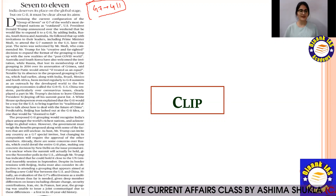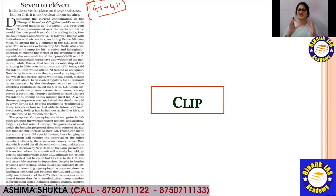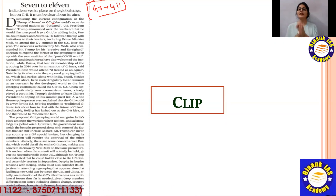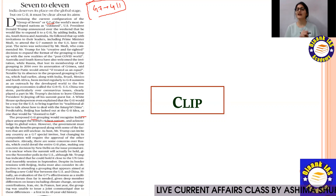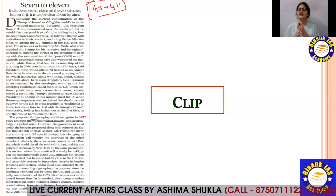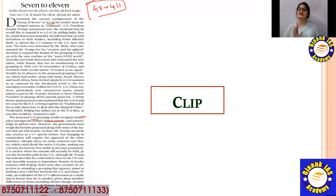From Group 7, which is the world's most developed countries with the greatest economic strength, there is a proposal to expand to G11. The proposed G11 grouping would recognize India's place among the world's richest nations. We will see some more information and analysis on this.